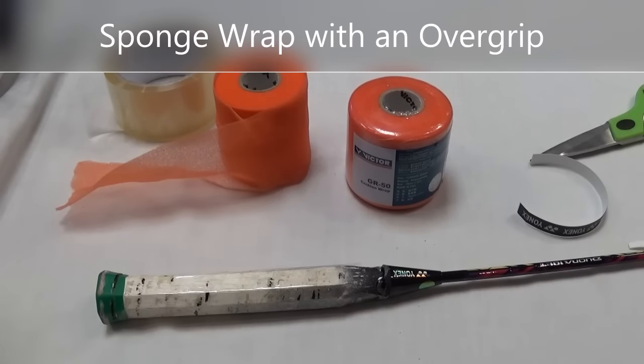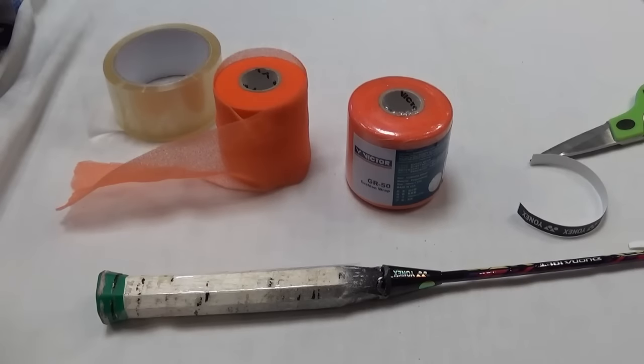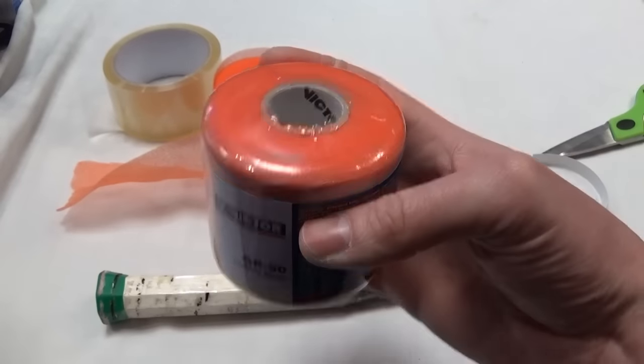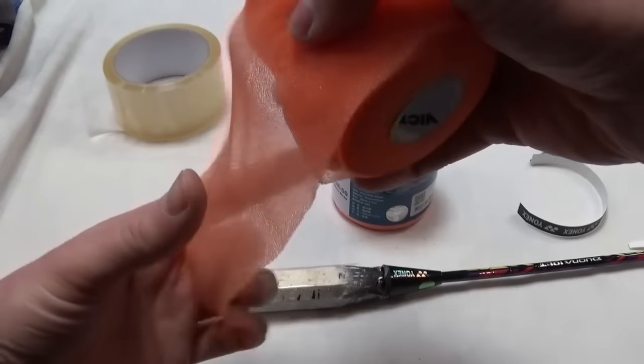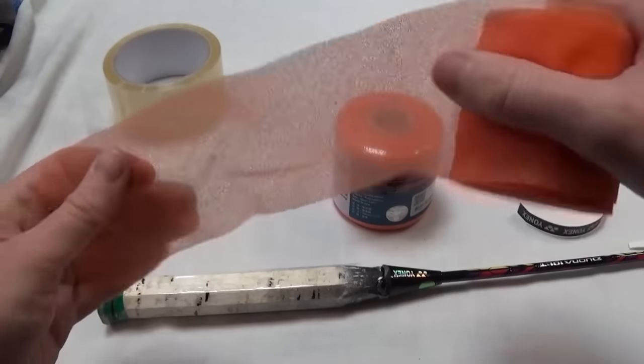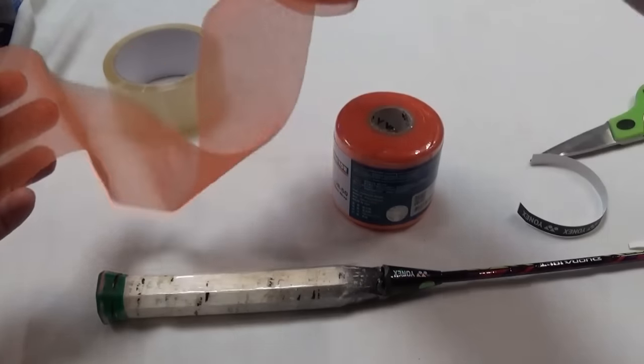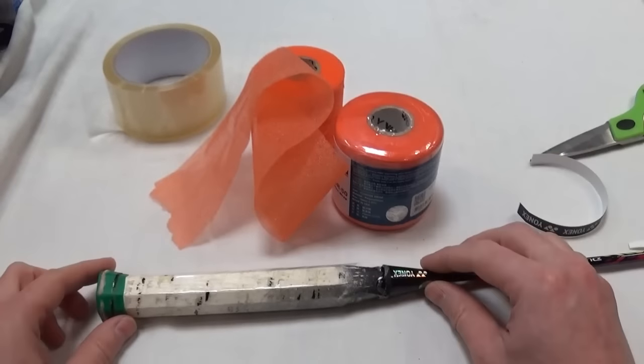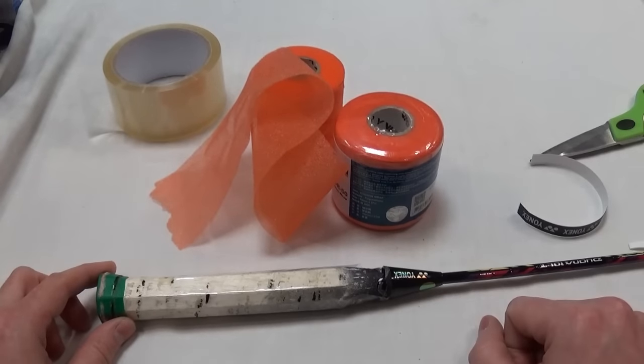If you want to keep your grip nice and thin but you want a little bit more cushioning than just putting the over grip straight onto the handle, you could try something like this Victor cushion wrap. It's just basically a big roll of sponge, it's very thin, very light, hardly weighs anything, and you can put that over the racket handle underneath the over grip to give you that little bit of sponge feeling.